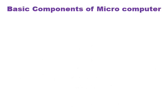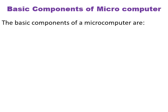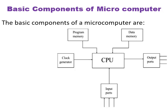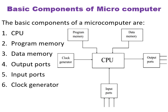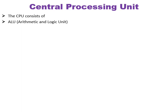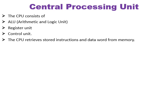The basic components of microcomputers are CPU, Program Memory, Data Memory, Output Ports, Input and Clock Generator. The CPU consists of ALU (Arithmetic and Logic Unit), Register Unit, and Control Unit. The CPU retrieves stored instructions and data words from memory, and also deposits processed data in memory.